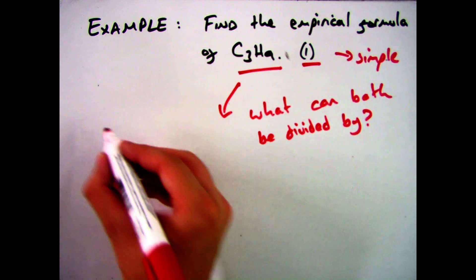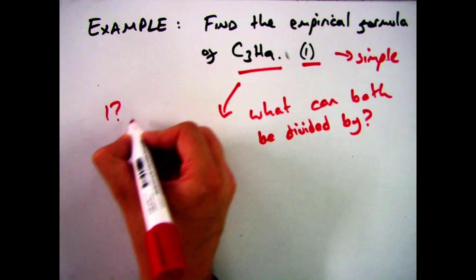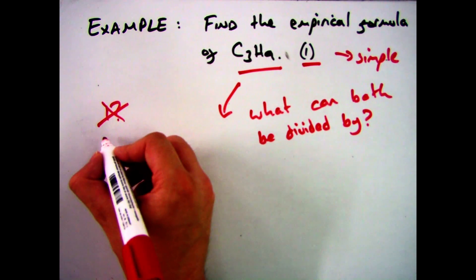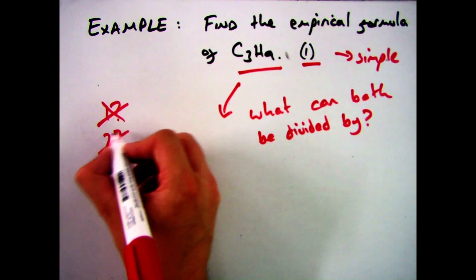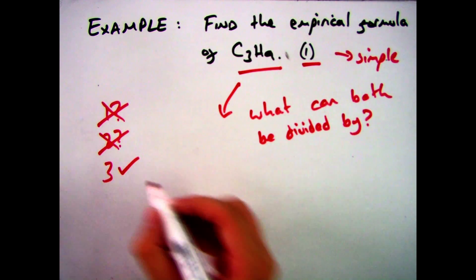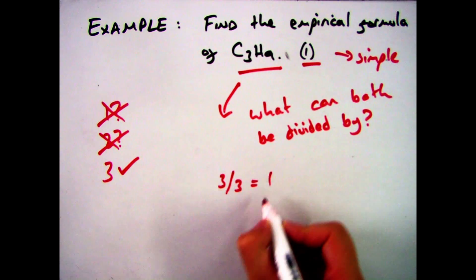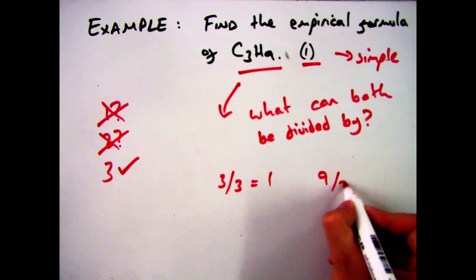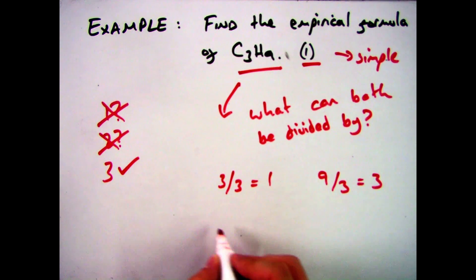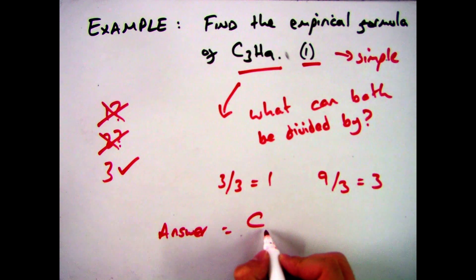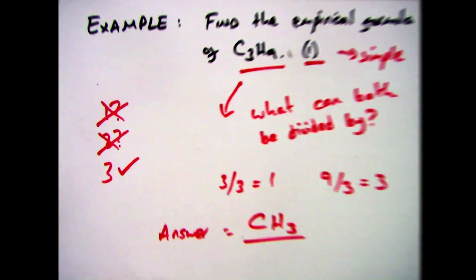So the next bit is a bit of trial and error. You know they can all be divided by one so we're not going to include that. Can both be divided by two? No. Can they be divided by three? Yes. And because both of them can be divided by three, we then put that in. So three divided by three is one, nine divided by three is three. And that gives me an answer of one carbon, three hydrogens, which is CH3, which is my empirical formula.